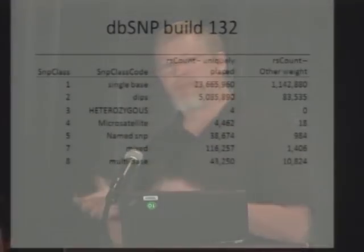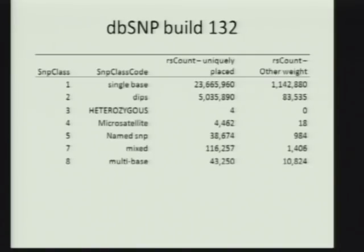Beyond the website, where else is the data available? dbSNP is the primary archive for SNPs and INDEL data coming out of the paper. The SNPs were put in Build 132, released a few months ago, and dbSNP is now up to 23.6 million uniquely mapped SNPs — single base, class one. The deletions from the paper will be in Build 133, with approximately 1.1 million INDELs to be loaded.